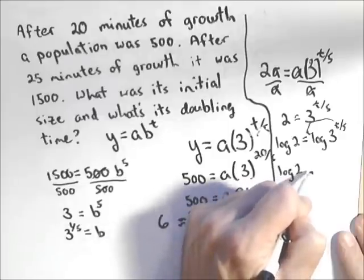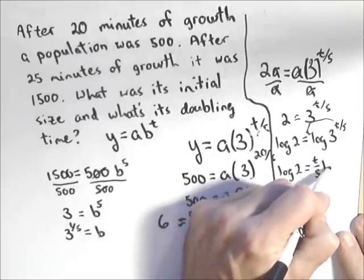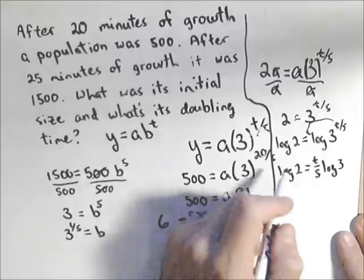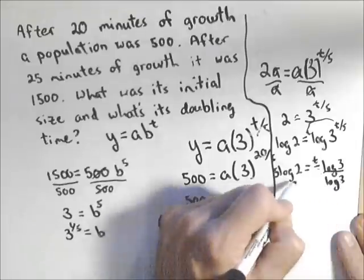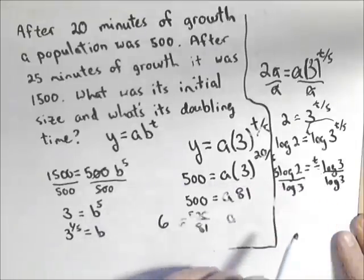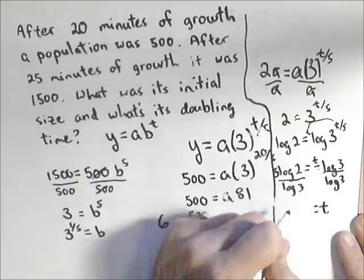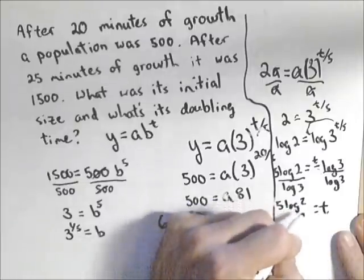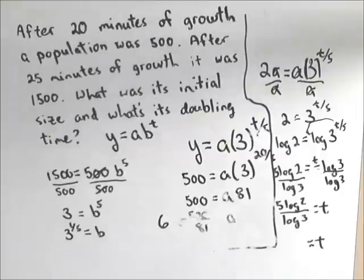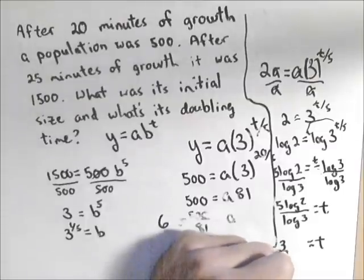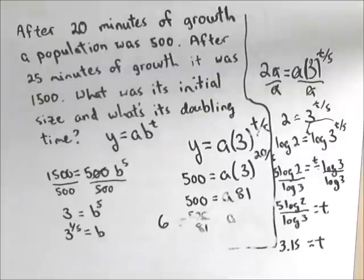Log of two equals log of three to the t over five, which allows us to pull that exponent out front. We have log of two equals t over five log of three. Multiply both sides by five, so that gets five over there. And divide both sides by log of three. We get t exactly as five log of two over log of three. A lot of times we'll want to give that as a number. Calculating it in our calculator, we get about 3.15. And now, we did this whole problem in minutes, so it's about 3.15 minutes.